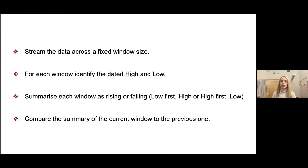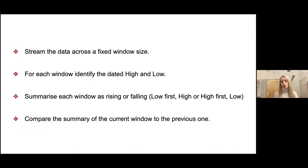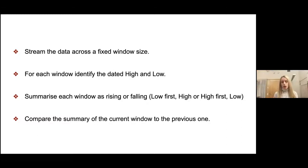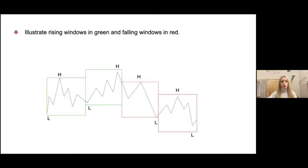Now we're going to look at the basic steps for the trend calculus algorithm. First, we want to stream the data across a fixed window size. Then for each window we want to identify the dated highs and lows, and depending on the order of occurrence of these highs and lows, we want to summarize each window as a rising or falling window. Lastly, we compare this summary of the current window to the previous window — rising windows are illustrated in green and falling windows in red.